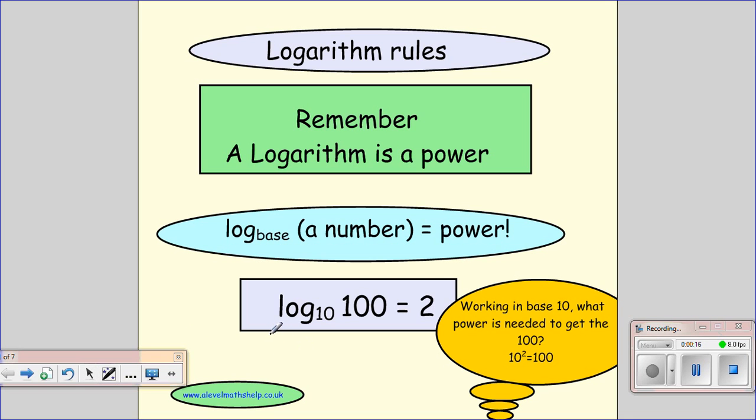So if we're looking at log in base 10 of 100, we're saying what power in base 10 would we need to give us 100? So 10 squared equals 100, so the power needed is 2.